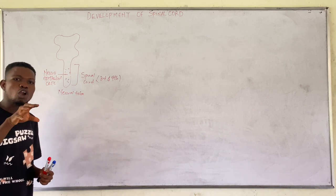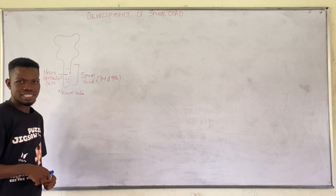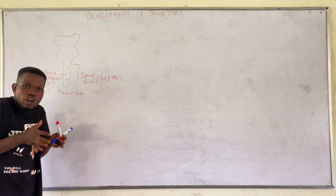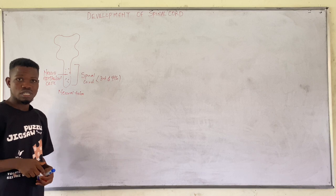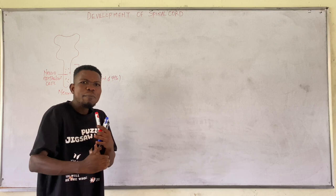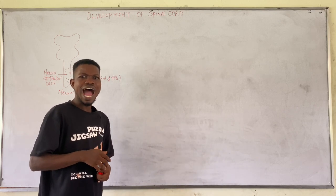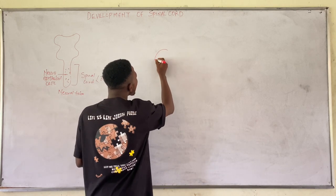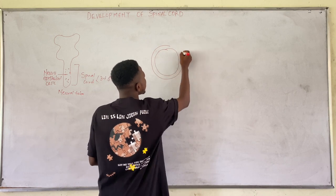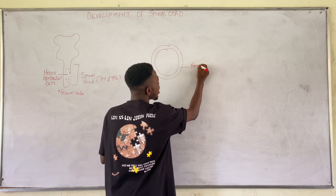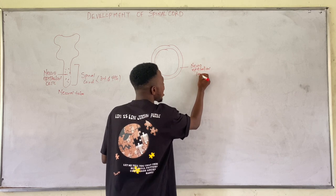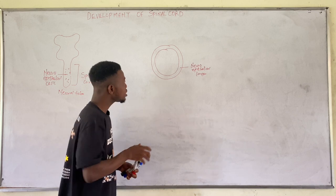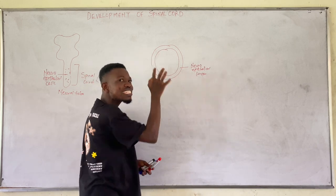The walls of the caudal part of the neural tube are made up of neuroepithelial cells. When you undergo a cross section of the spinal cord — which is the caudal part of the neural tube — you notice the presence of neuroepithelial cells. During the development of the spinal cord, the neuroepithelial cells divide and proliferate rapidly, and when they divide they begin to constitute one another and give rise to what we call the neuroepithelial layer.